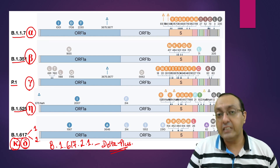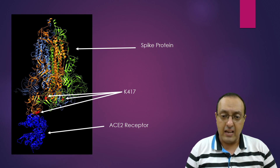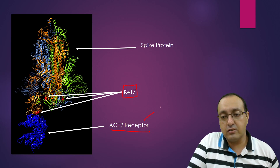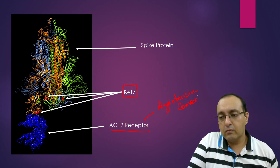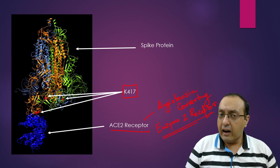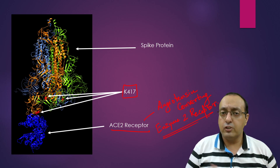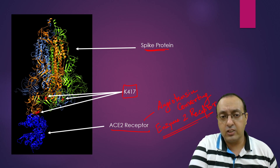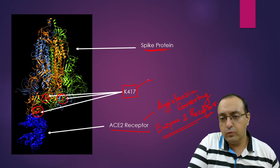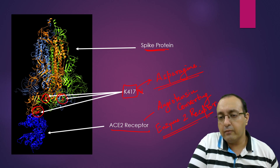Here is the structure of the spike protein and the location of K417. You can also see the structure of the ACE2 receptor — the angiotensin-converting enzyme 2 receptor — which is the main receptor in lung cells and many other cell types of the human body that interacts with the spike protein. The spike protein is trimeric in nature, as shown in the diagram with three colors, and these are the lysine residues that have been changed to asparagine — the K417N mutation.